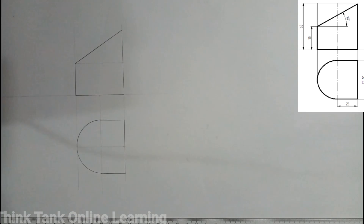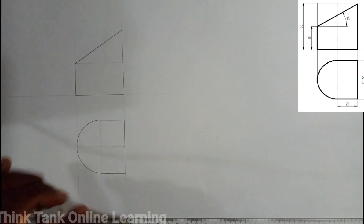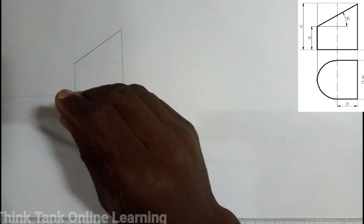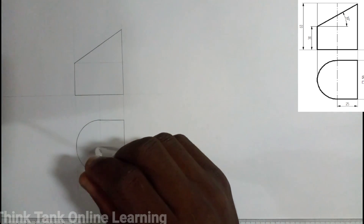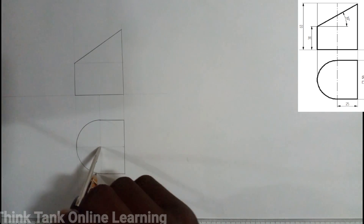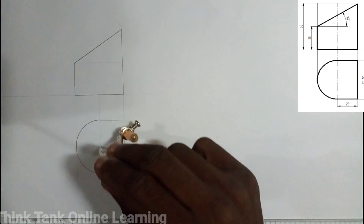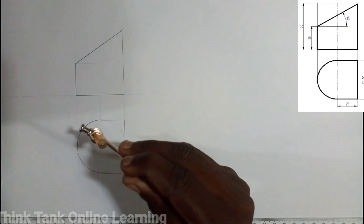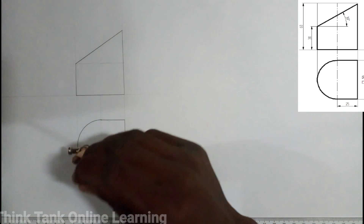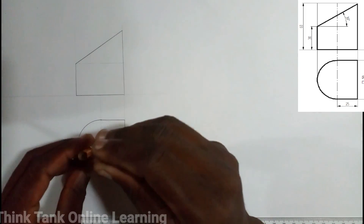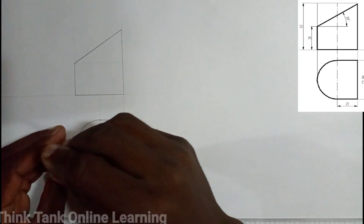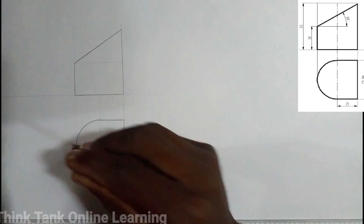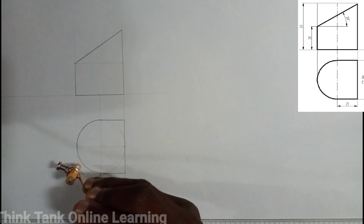I'm going to divide this circle into 12 equal parts. I'm going to draw a construction line so that I can divide the circle into 12 equal parts.